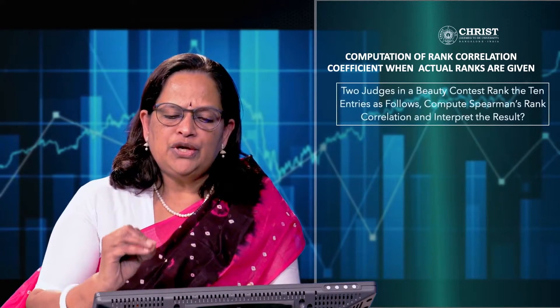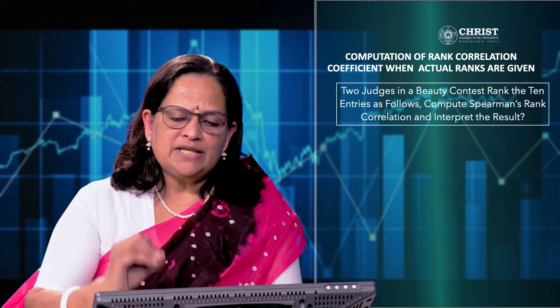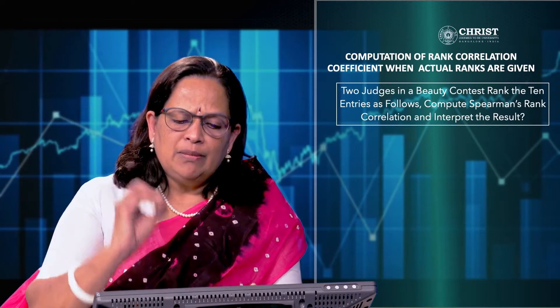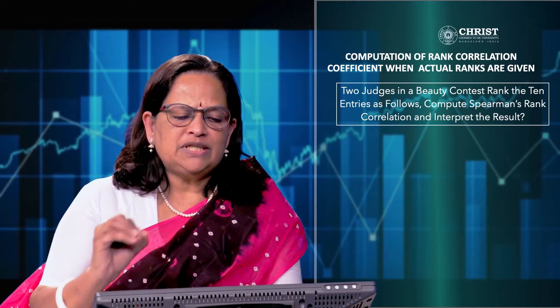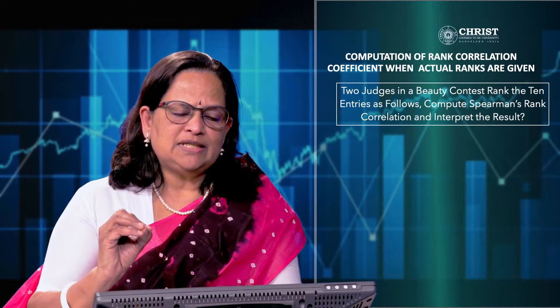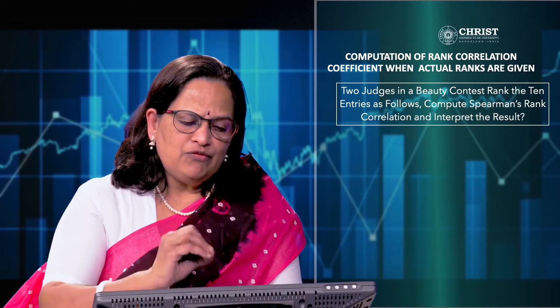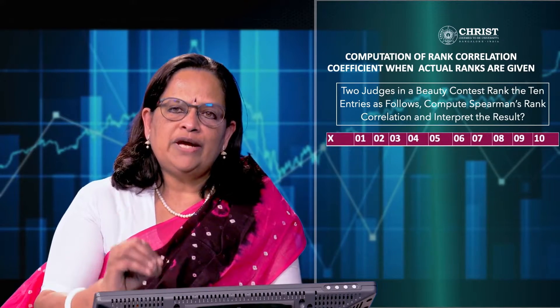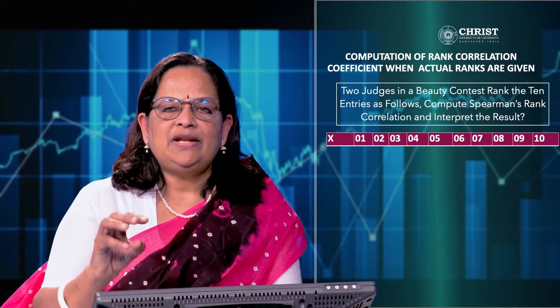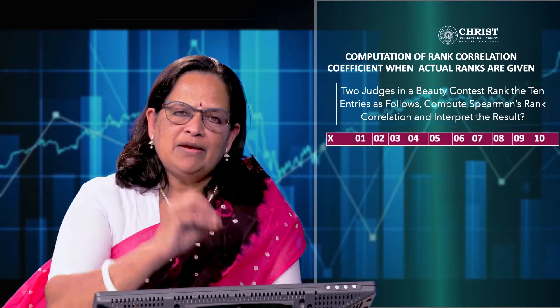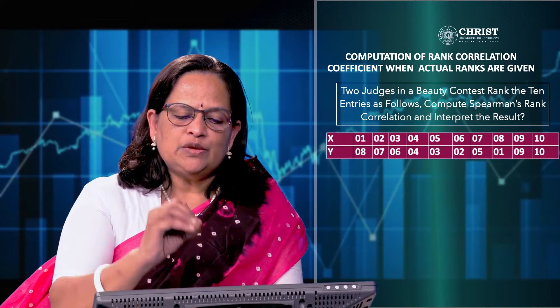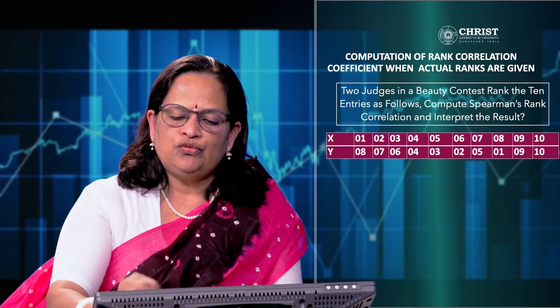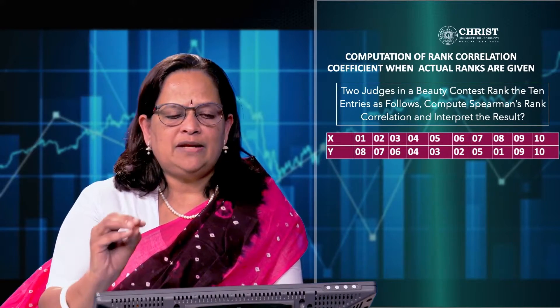Two judges in a beauty contest rank 10 entries as follows. Compute Spearman's rank correlation and interpret the result. Ranks for x series: 1, 2, 3, 4, 5, 6, 7, 8, 9, and 10. Ranks for y series: 8, 7, 6, 4, 3, 2, 5, 1, 9, and 10.